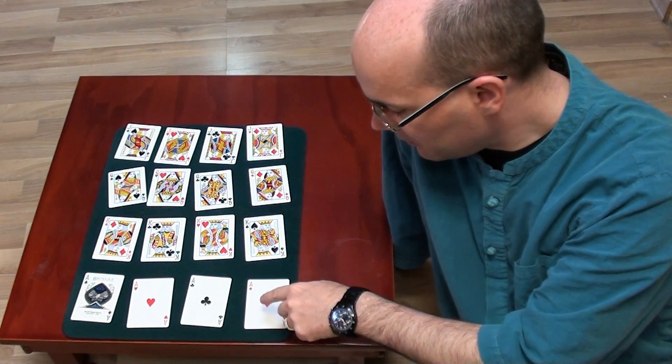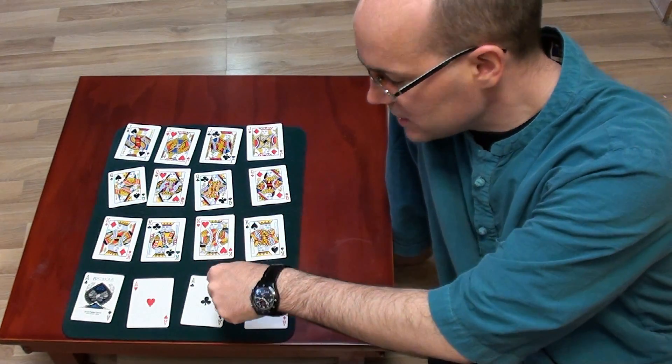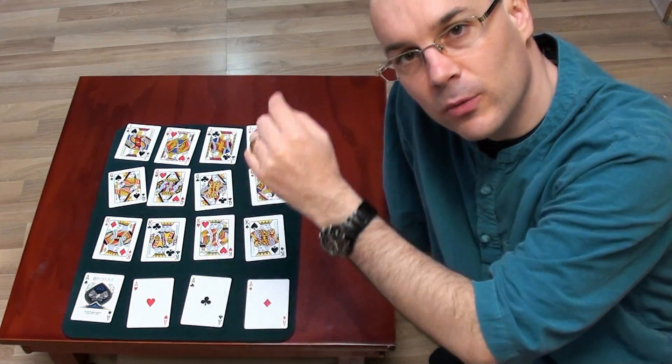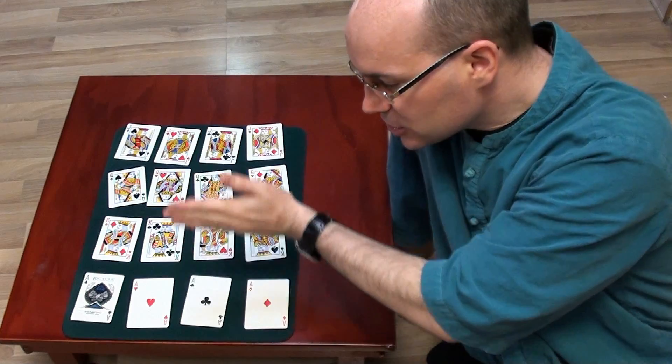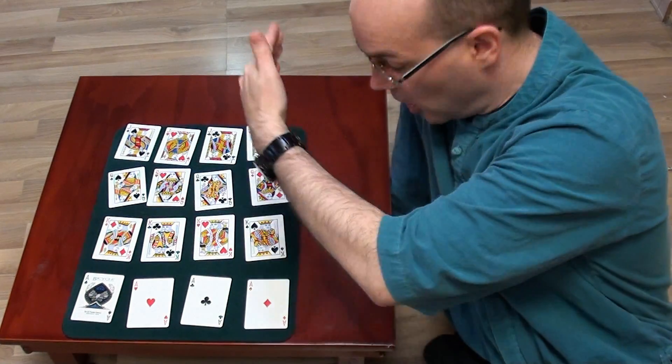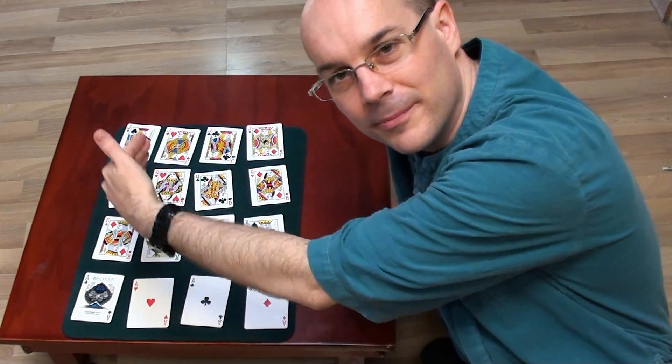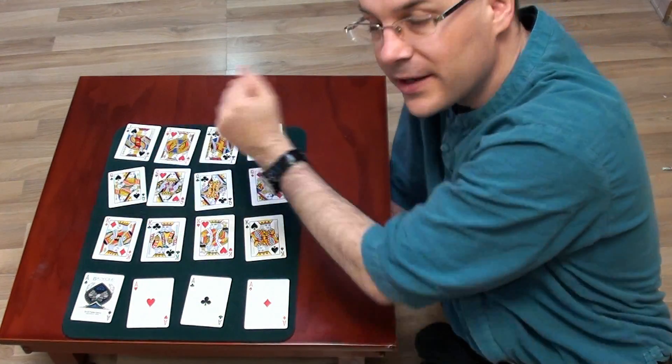I want to have 1 Ace, 1 King, 1 Queen and 1 Jack on each line, on each column and on both diagonals.